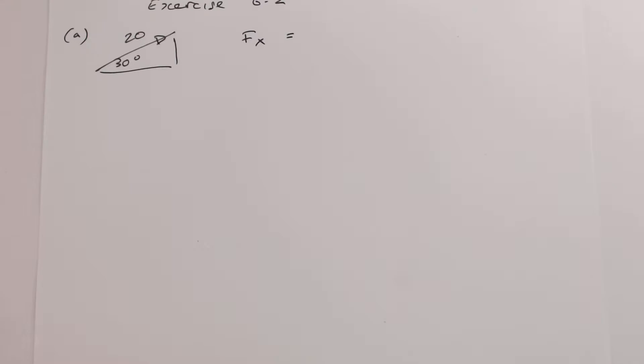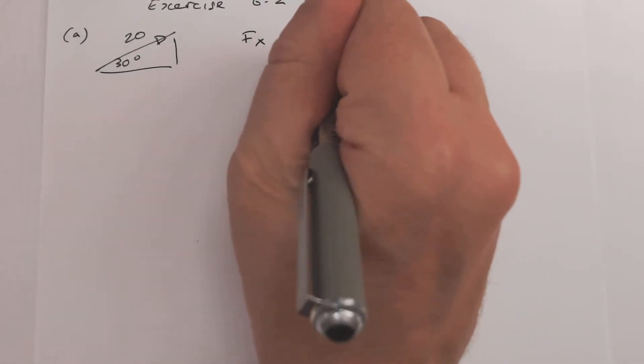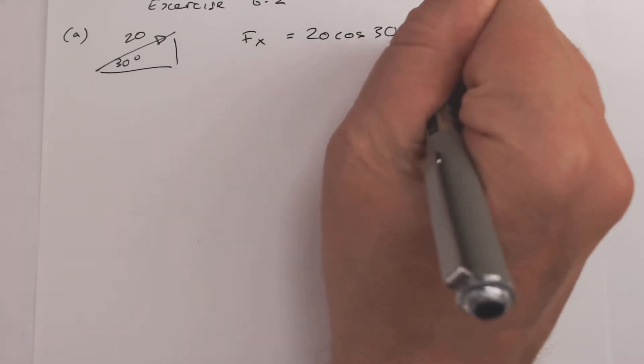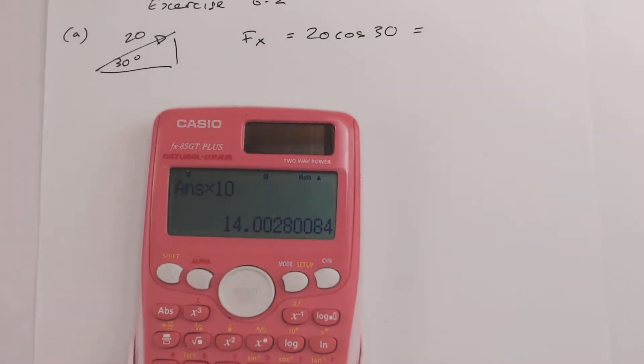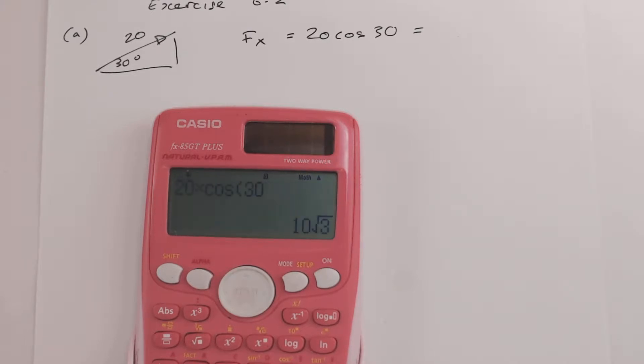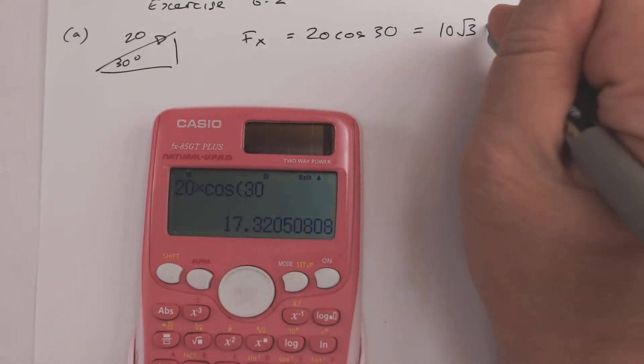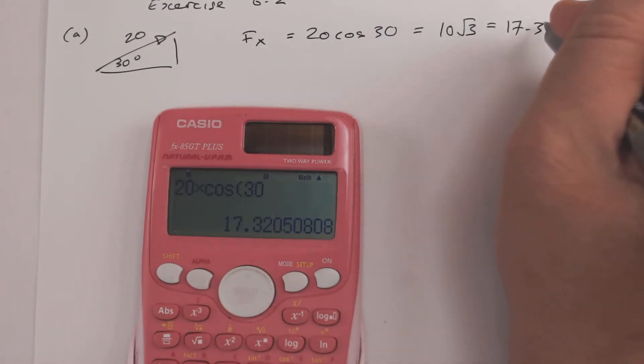So 20 times cos 30, 10 root 3, is 17.32 newtons.